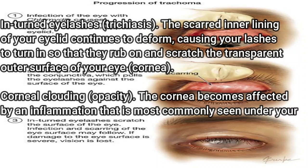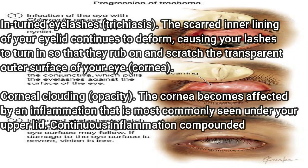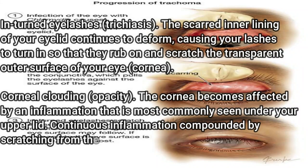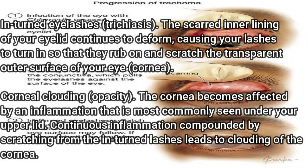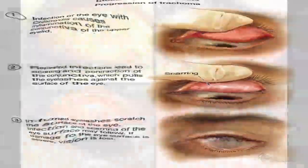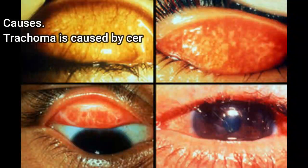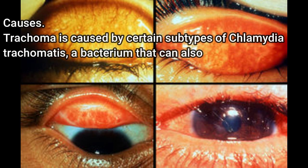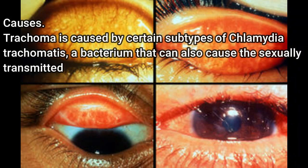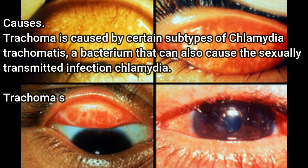Stage 5 — Corneal clouding (opacity): the cornea becomes affected by inflammation most commonly seen under the upper lid. Continuous inflammation, compounded by scratching from the inturned lashes, leads to clouding of the cornea. Trachoma is caused by certain subtypes of Chlamydia trachomatis, a bacterium that can also cause the sexually transmitted infection chlamydia.